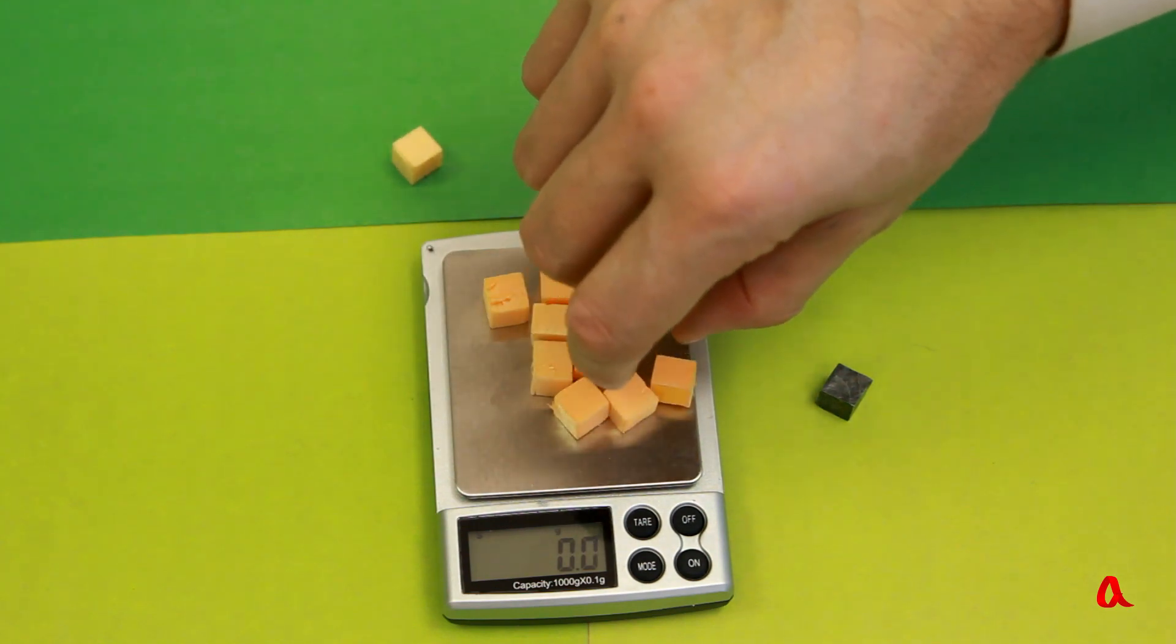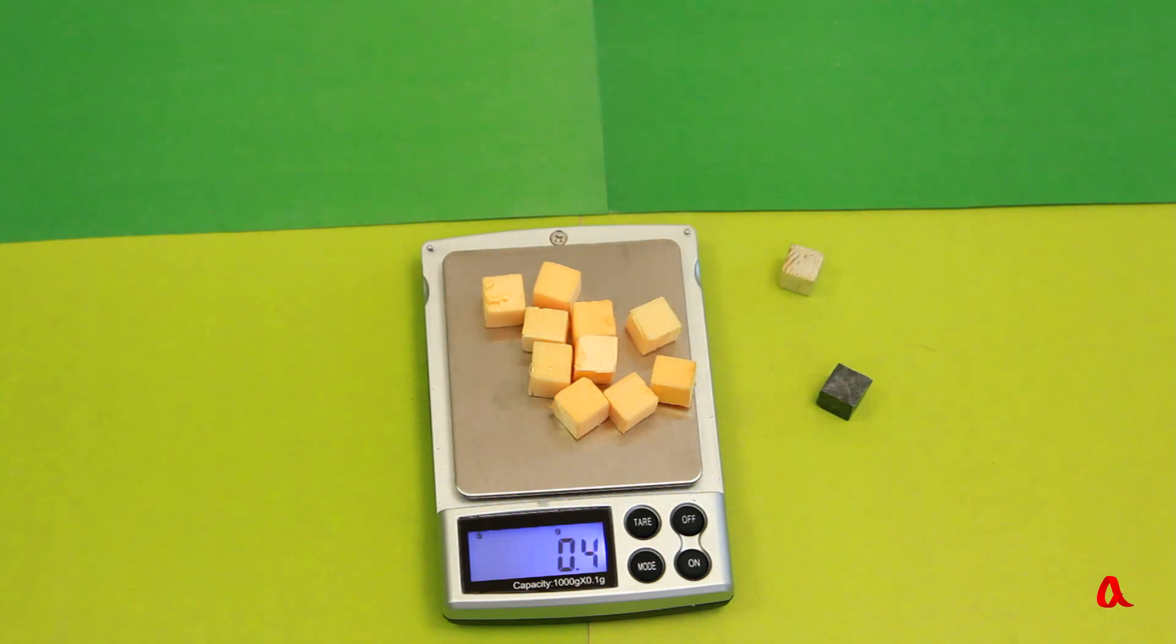We'll have to take 10 cubes of that volume. They weigh 0.4 gram. This means that 1 cubic centimeter of foam weighs 10 times less, so its density is 0.04 gram per cubic centimeter.